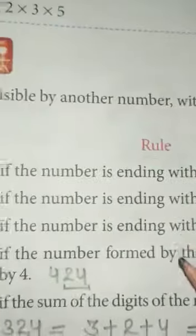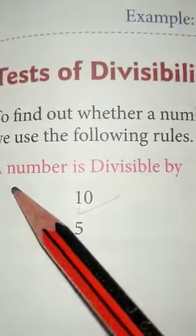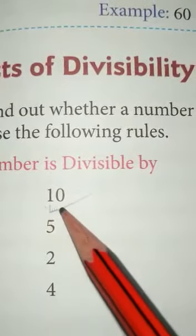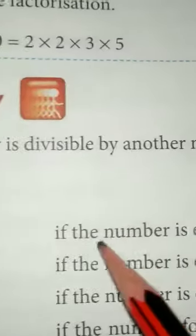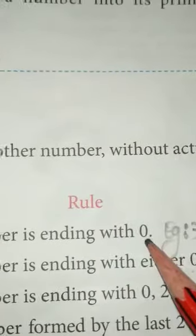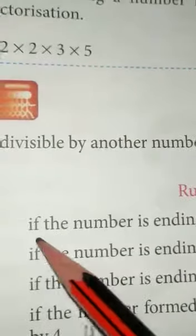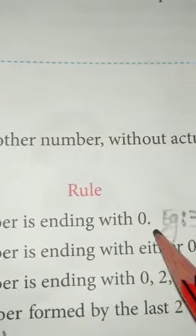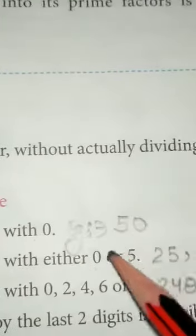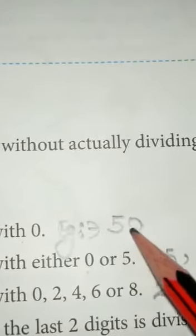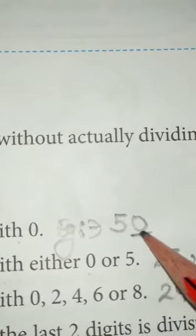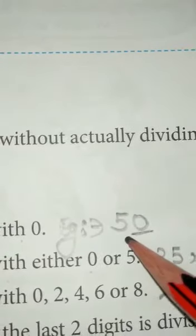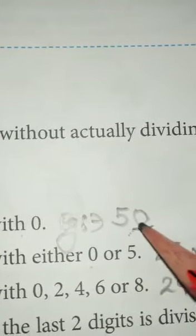First, how we will check that a number is divisible by 10. The rule is: if the number is ending with 0, it means it is divisible by 10. Like 50 — it is ending at 0, which means this number is divisible by 10.